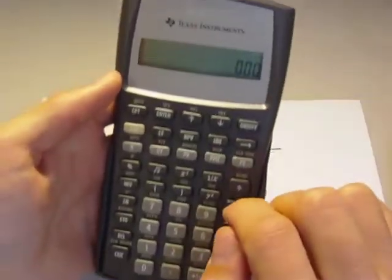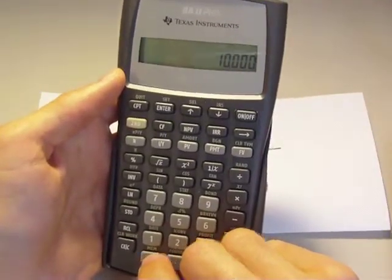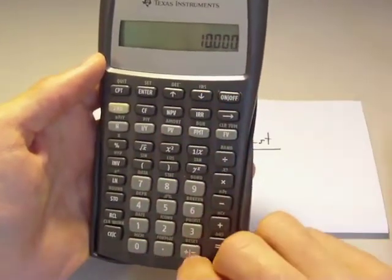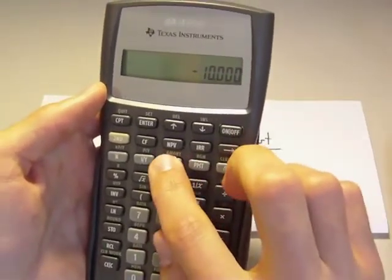We've got $10,000 as our present value. So $10,000. And with any present value, you always want to make it negative on these financial calculators. So let's hit present value.